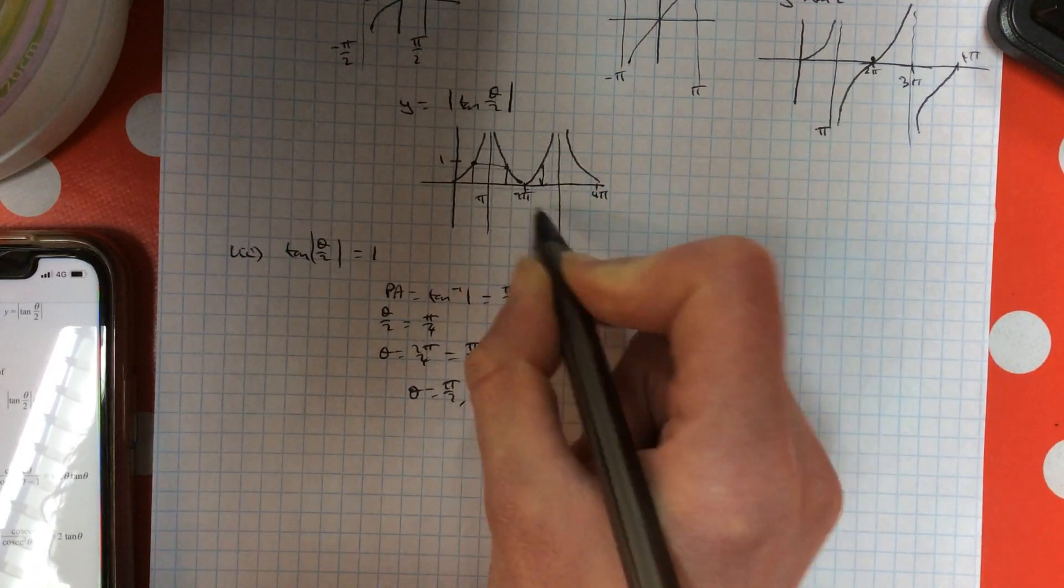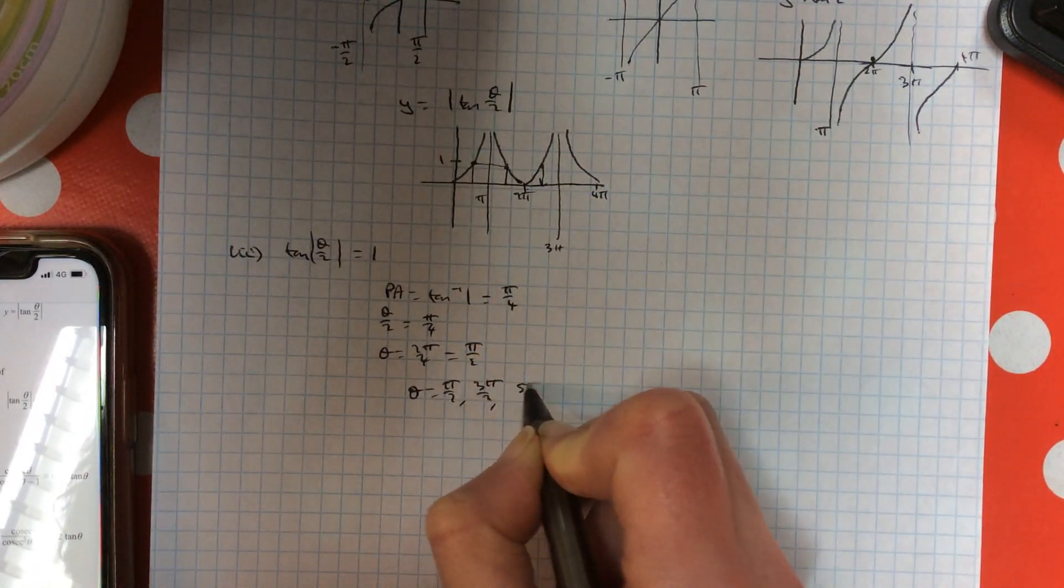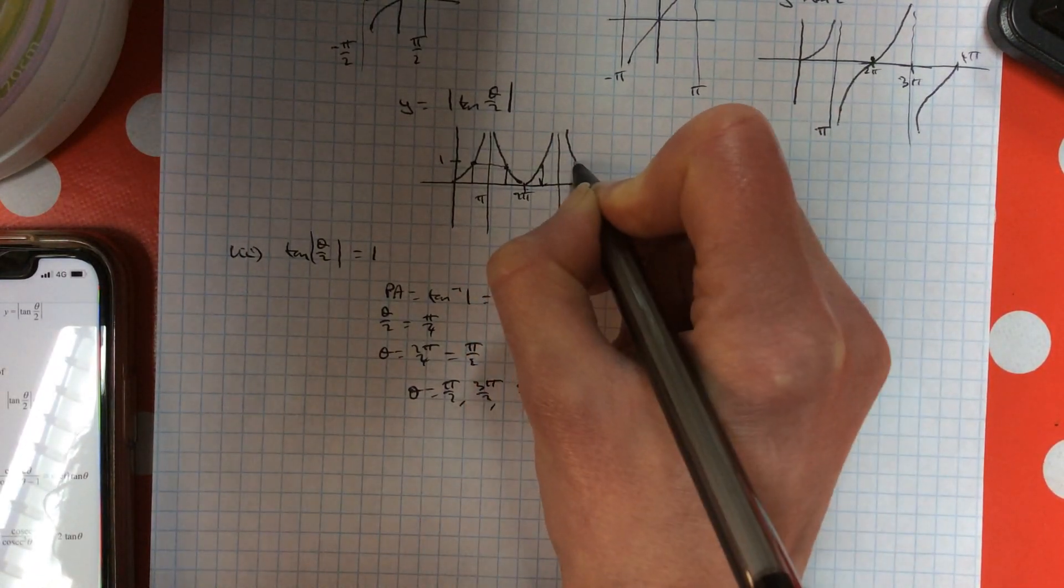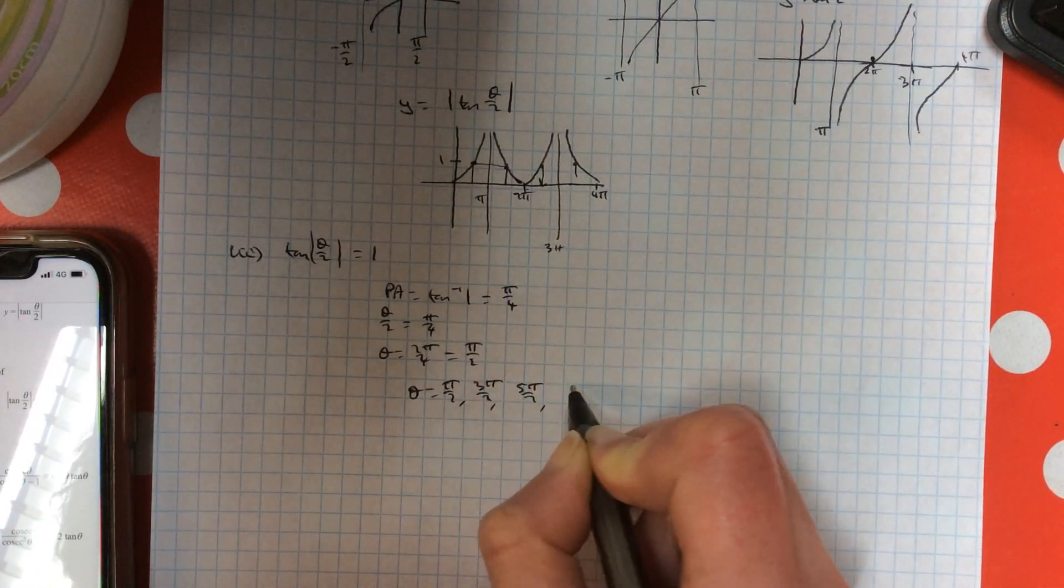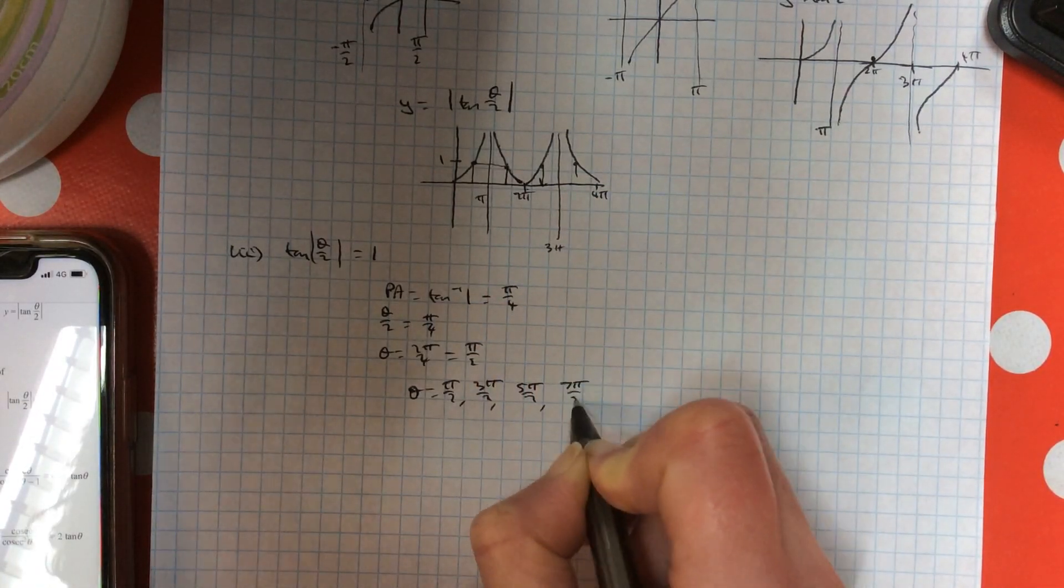The next one's in here, between 2 and 3 pi, so it's 5 pi over 2. And the last one's over here between 3 pi and 4 pi, so it's 7 pi over 2.